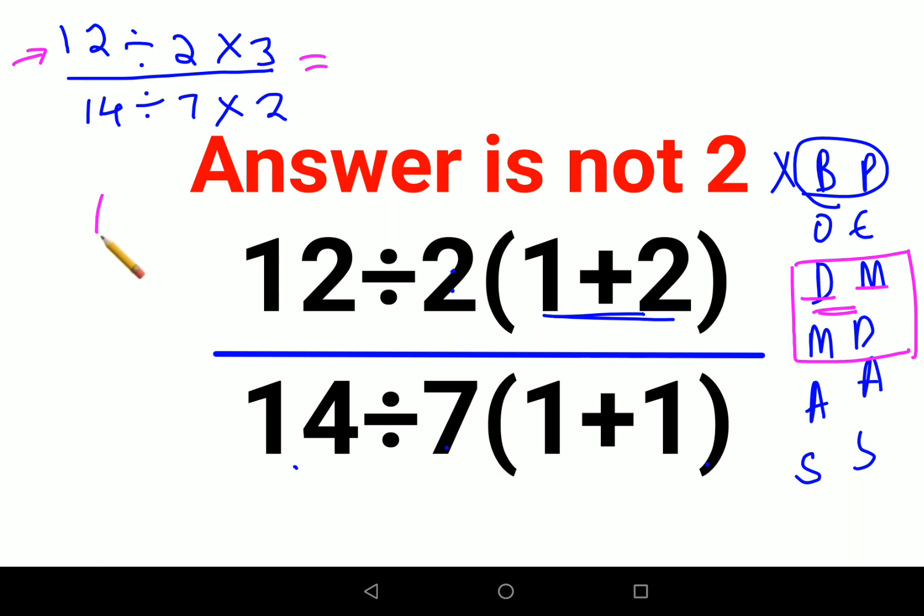Here, you will just follow the rule of left to right. This is universal. Everywhere, we just go from left to right. So, we do 12 divided by 2, which is 6 into 3. And this also, 14 divided by 7, which is 2 into 2.